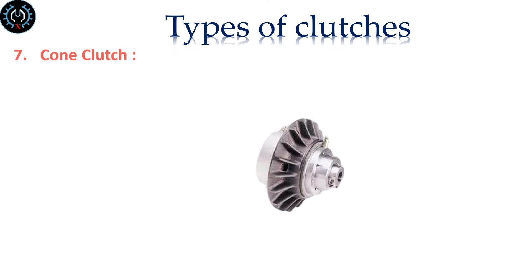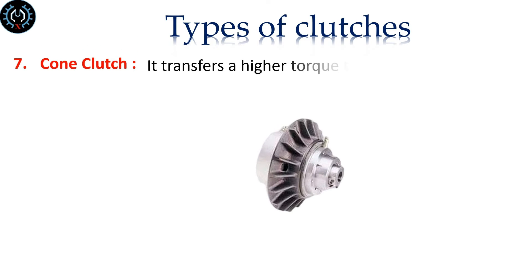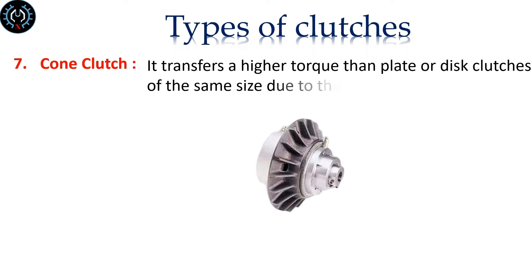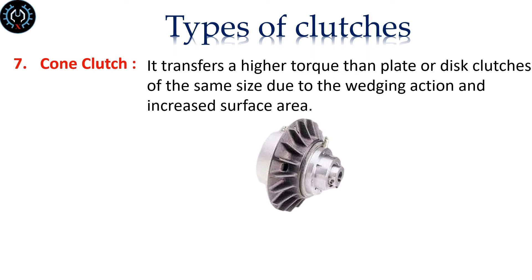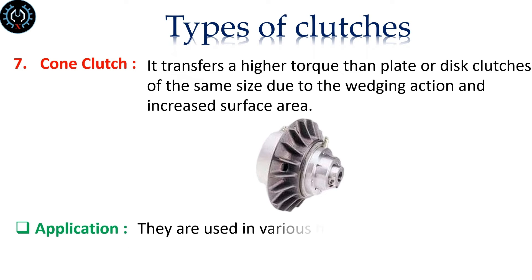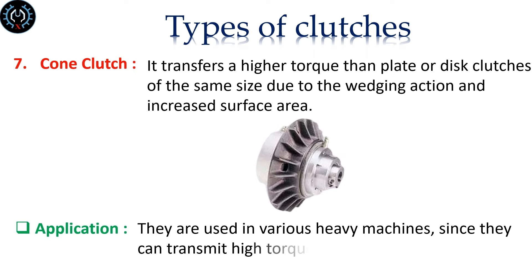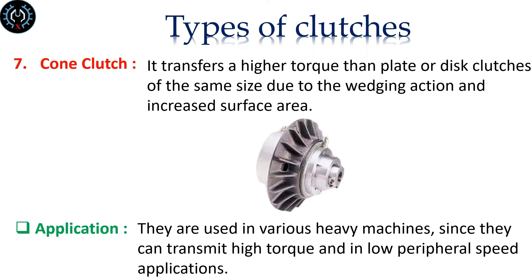Cone clutch. It transfers a higher torque than plates or disc clutches of the same size due to the wedging action and increased surface area. Cone clutches are used in various heavy machines since they can transmit high torque and in low peripheral speed applications.